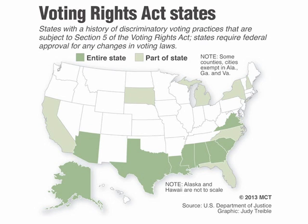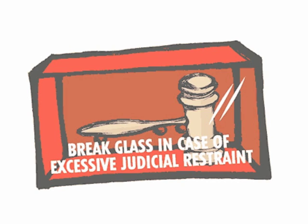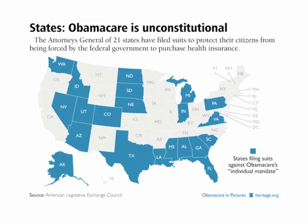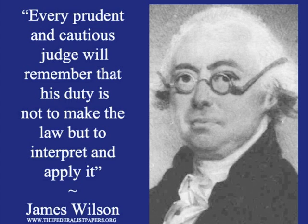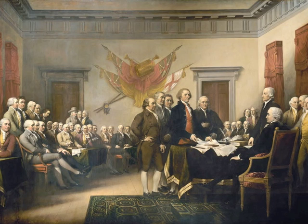What is judicial restraint? It is the philosophy that the courts should allow the states and the other two branches of the federal government to solve social, economic, and political problems. Federal courts should act only in those situations where there are clear constitutional questions. Courts should merely interpret the law rather than make the law, and should follow the original intent of the founders.